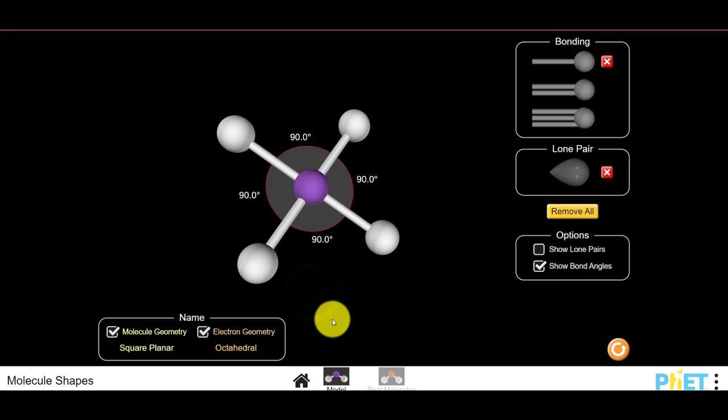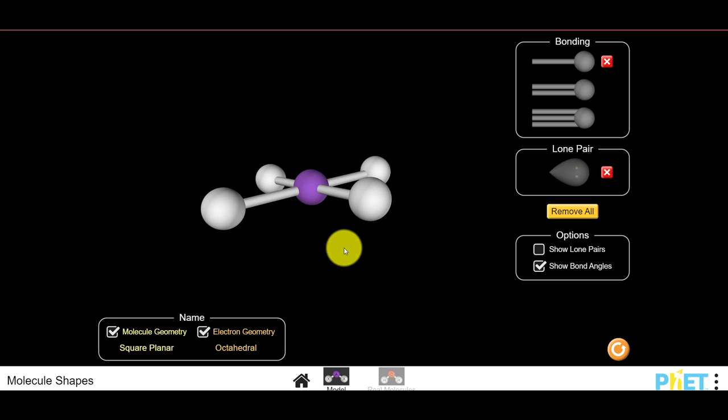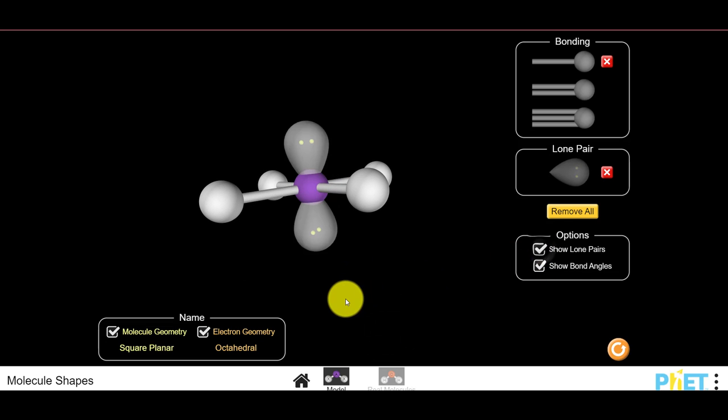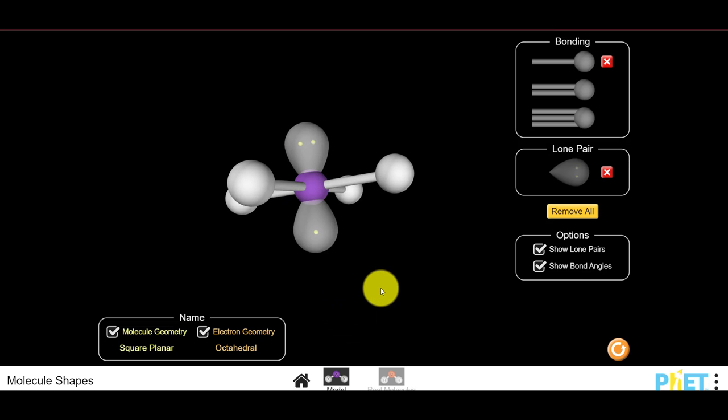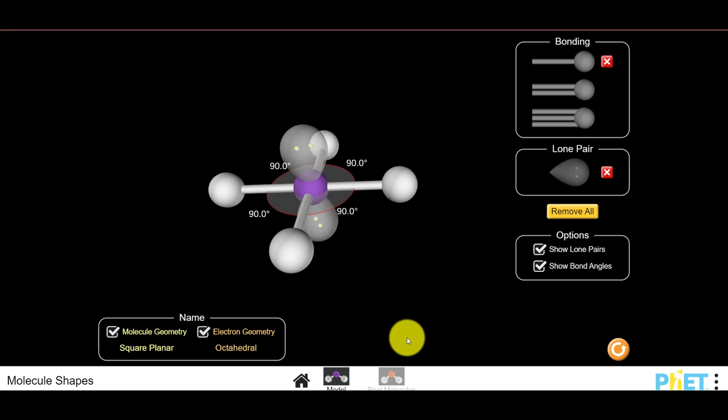As we would expect, the bond angles would be 90 degrees or 180 degrees if you were to go across the middle. And because your lone pairs are on opposite sides, they actually kind of cancel each other out. So the bond angles don't flex here. They're exactly 90 degrees and exactly 180 degrees.